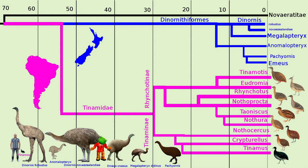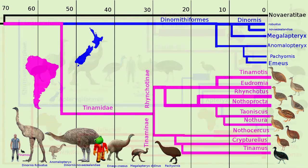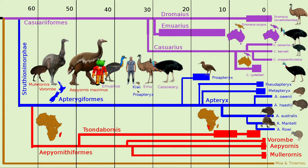Dinornis robustus, the South Island Giant Moa, was maybe the largest bird ever. Can you recognize the Tinamu in this comparison? The Novioratitae finally split into the Cassowary and Emu line in Australia and New Guinea. The sister taxon, the Struthiomorphae, split into the Kiwi in New Zealand and the elephant birds in Madagascar. Aepyornis maximus was a large and heavy bird, maybe the heaviest bird ever. The sister taxon, Mullerornis, reached only half the size. Really small by comparison was Protapterix.